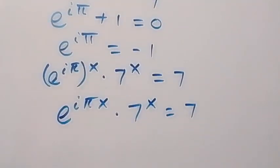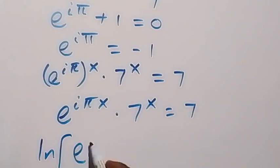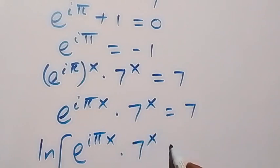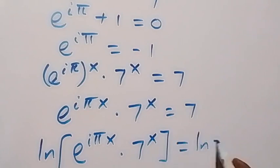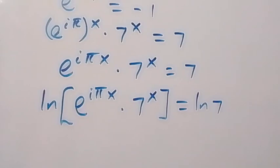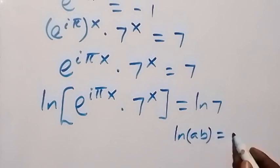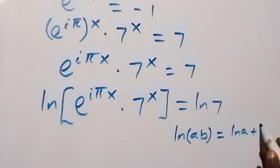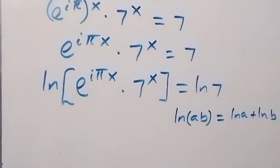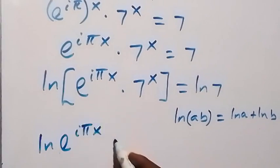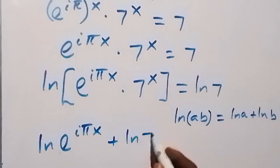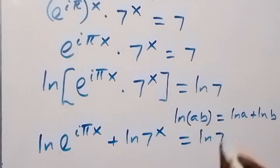Putting natural log on both sides, we have ln of the bracket e^(iπx) times 7 raised to power x, close bracket, equals ln 7. Recalling the log law ln(AB) = ln A + ln B, we separate this as ln(e^(iπx)) plus ln(7^x), equals ln 7.